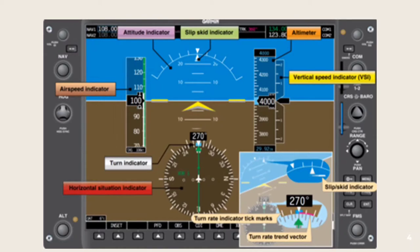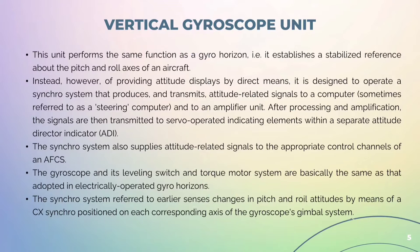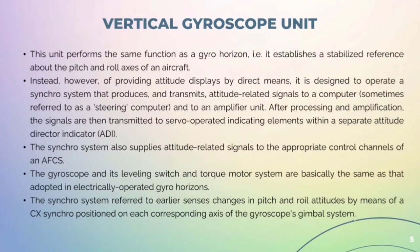Vertical Gyroscope Unit: This unit performs the same function as a gyro-horizon, that is, it establishes a stabilized reference about the pitch and roll axis of an aircraft.